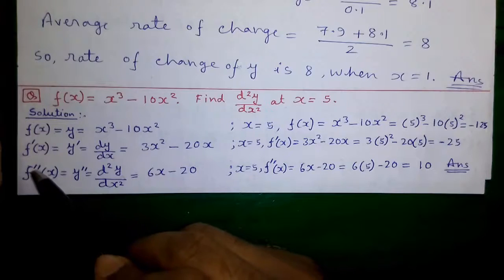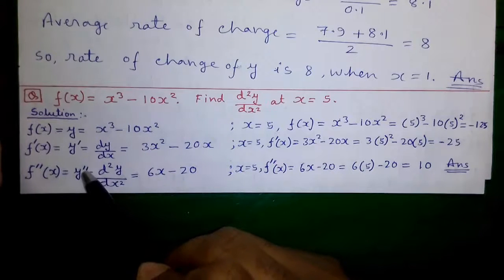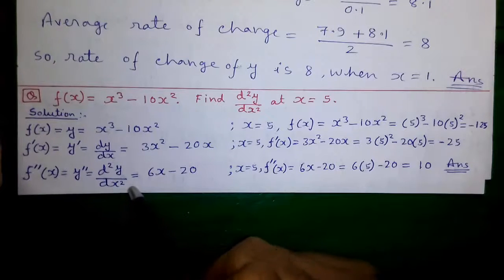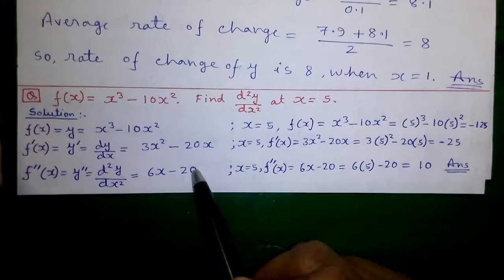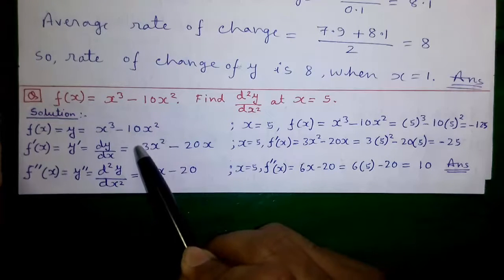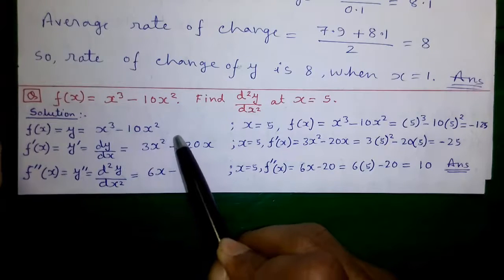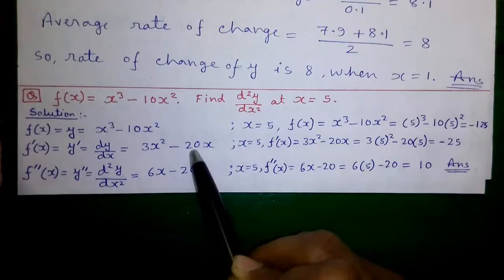Next, we find f''(x), also called y double prime or d²y/dx², which equals 6x minus 20. Again the same logic: the power comes forward, so 2 times 3 is 6, and x to the power 2 minus 1 is x to the power 1, or x — giving us 6x minus 20.